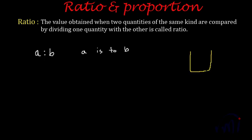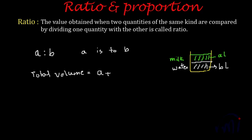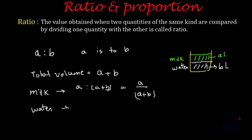Suppose you have a beaker and you pour b liters of water, then a liters of milk. They mix to form a homogeneous solution. The total volume will be a plus b. The ratio of milk to the total solution is a:(a+b), or a/(a+b). The ratio of water to the total solution is b:(a+b), or b/(a+b). This is how we find the ratio with respect to the total quantity.